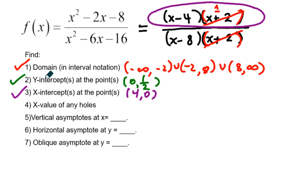Then we have x-value of any holes. Well, that factor that we just canceled off, that we solved for x before, that is one of the removable discontinuities, or holes. So we're going to have a hole at negative 2. Holes occur where both the numerator and the denominator would be 0 at the same time.